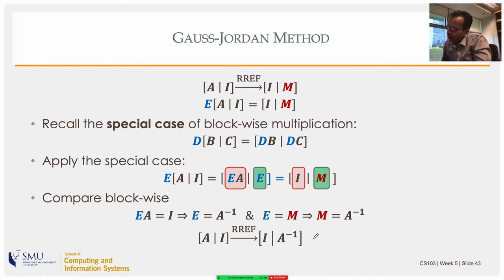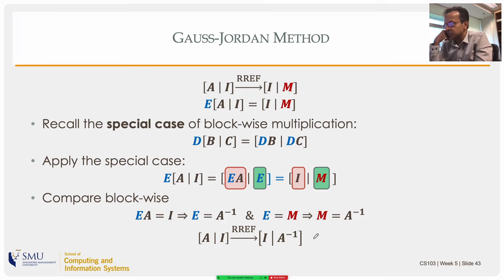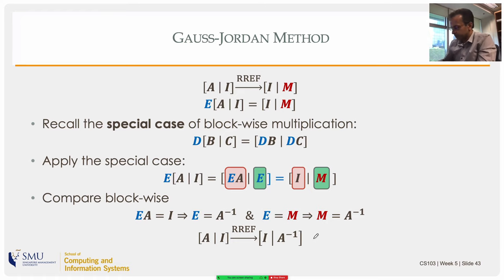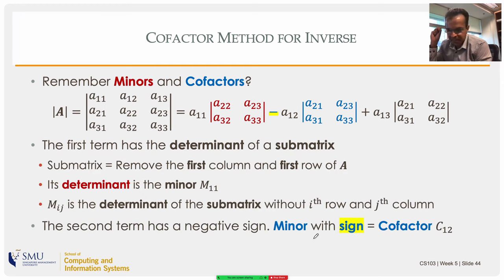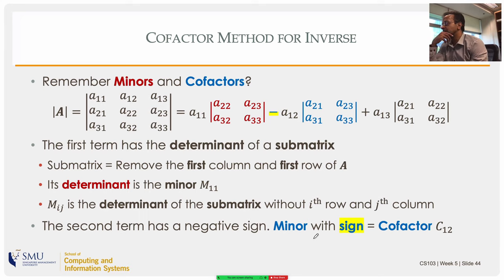This proof uses matrix algebra elegantly. There is also a less sophisticated alternative proof in the textbook for those who want a different perspective. The Gauss-Jordan method is the right computational approach for finding inverses because it is efficient, but inverses can also be computed using minors and cofactors.